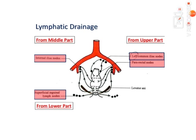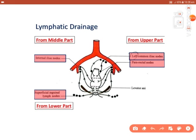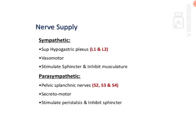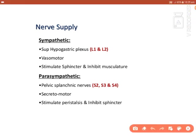Lymphatic drainage: lymphatics from the rectum mainly drain into the pararectal lymph nodes. The upper two-thirds drain to the inferior mesenteric nodes, and the lower one-third drains directly into the internal iliac lymph nodes. Some lymph also goes to the superficial inguinal lymph nodes.